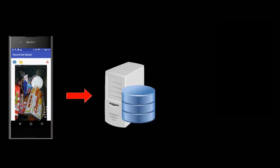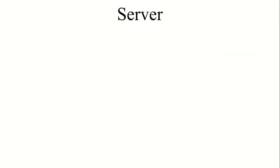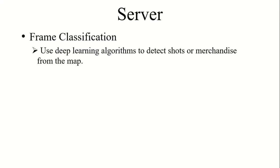The prototype app takes shopping videos and streams the video to the backend server. The server analyzes the video to detect shopping events and recognize shopping items. The shopping information will be sent back to the virtual cart app. The server is divided into three parts.